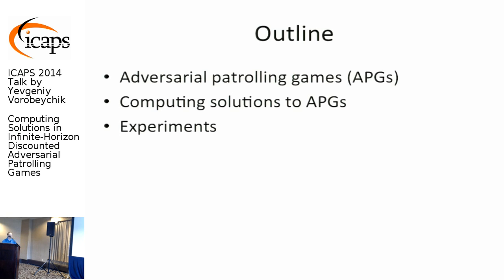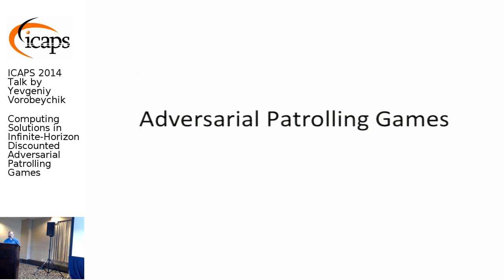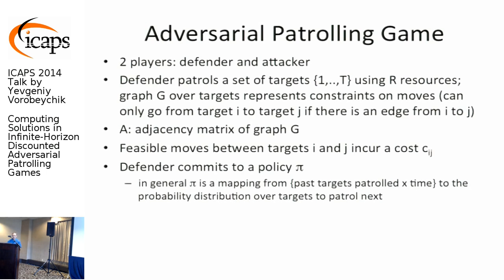The bulk of the talk is about computing solutions to APGs, which turns out to be very hard. In adversarial patrolling games, there are two players: a defender and an attacker. The defender patrols a set of targets labeled one through T and can use up to R resources. We impose a graph G over targets representing movement constraints: an edge from target I to J means you can move between them; no edge means that move is infeasible. We encode this with adjacency matrix A.